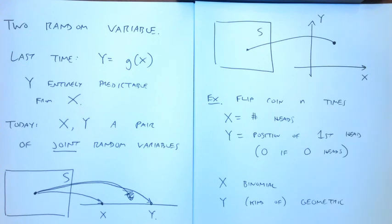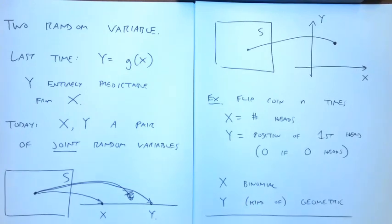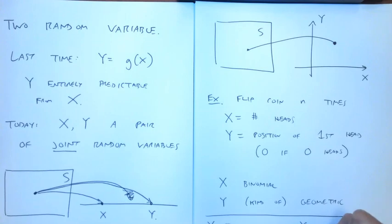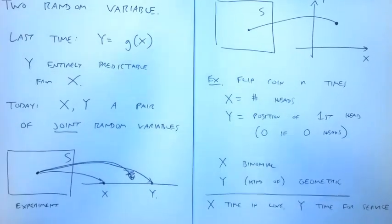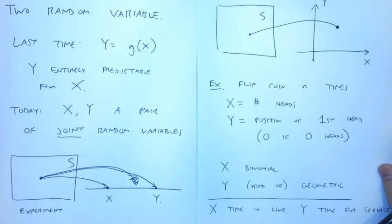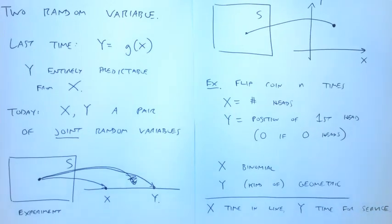We'll talk about that mostly next week, but this is the setup for the terminology we need to discuss joint random variables. Another example: I go to a bank where X is the time in line and Y is the time it takes me to complete my transaction. Depending on how I model things, maybe there's no reason to think X and Y are related — the time waiting in line may not impact how long I wait for service.